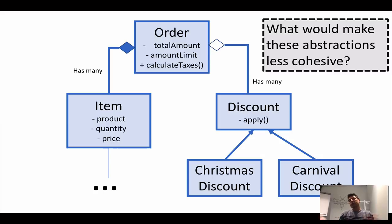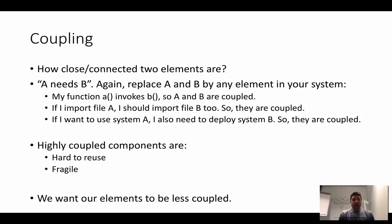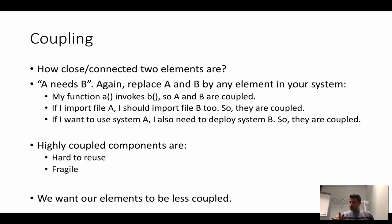Coupling is the other perspective. If we have many small cohesive modules, at some point they will have to get together to do the task. As soon as something depends on something else, you have coupling — A needs B. If A depends on B, C, D, E, F, G — this is very coupled and this module is hard to reuse. If you want to put A in another system, you have to take A, B, C, D along. It is more fragile: if C breaks, A will probably break as well — problems propagate because of this coupling relationship.